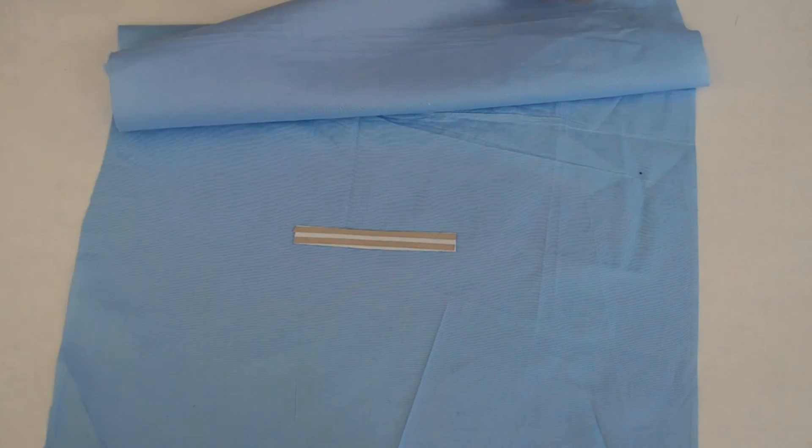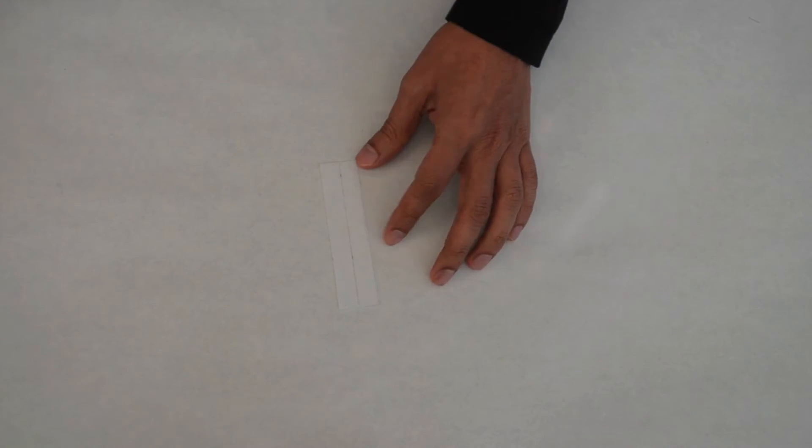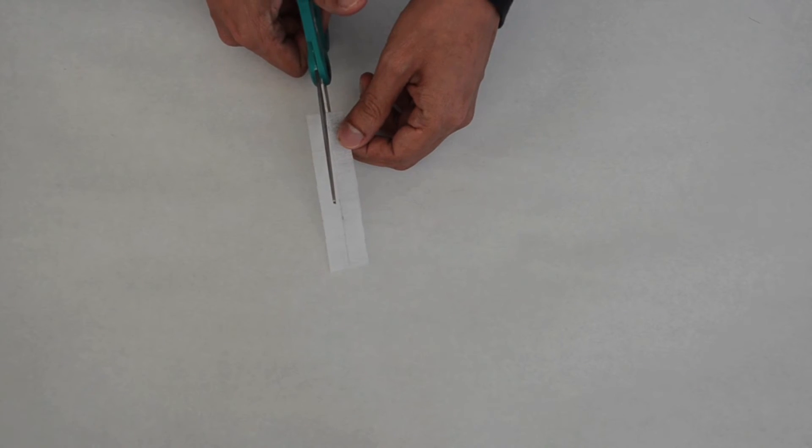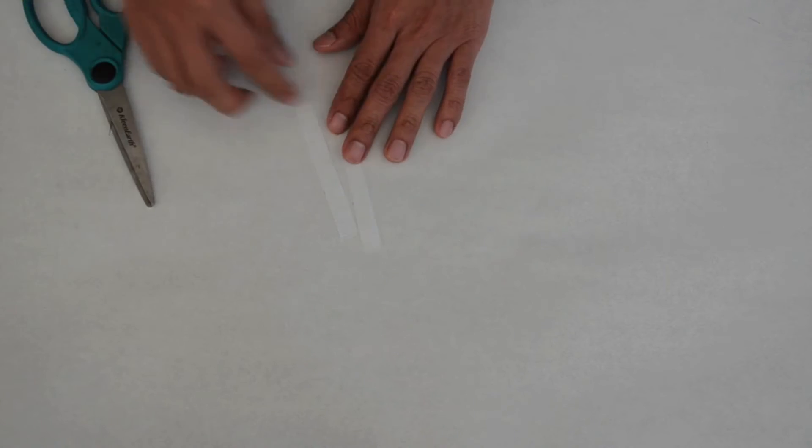For now, place the base to the side. Now take the two segment piece of fusible fabric which we cut off earlier and cut it in half to separate the two segments into single segments. One of the segments can be put off to the side. It is an extra piece provided to you in case you make a mistake during this step.